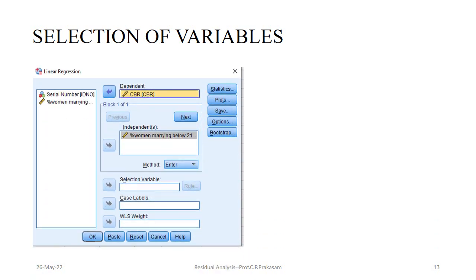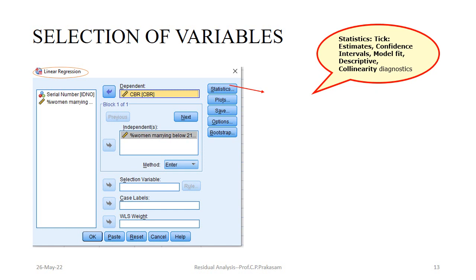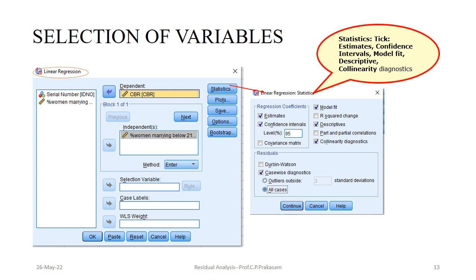Then, selection of the variables: we have to identify crude birth rate as the dependent variable, as well as the independent variable, women marrying below 21 years of age. Then, coming to the options, click Statistics. Once you click Statistics, you will get the linear regression statistics window. There, tick mark: Estimates, Confidence Interval, Model Fit, Descriptive, and Collinearity Diagnostics.